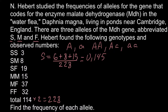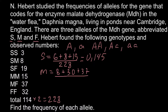Now we can find the allelic frequency of the M allele. We have eight M alleles from one genotype, plus 30 alleles from another, plus 37 alleles from another. We divide this by 228, and the allelic frequency of M is 0.329.